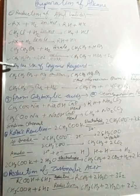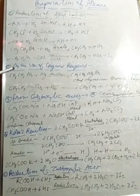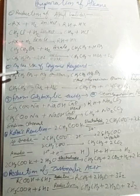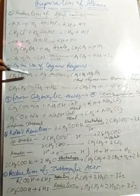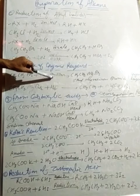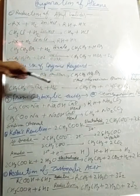The next method uses the Grignard reagent, which was discovered by Victor Grignard. Due to this discovery, he was also awarded the Nobel Prize. For example, CH₃CH₂Br plus magnesium in dry ether forms ethyl magnesium bromide, also called the Grignard reagent.